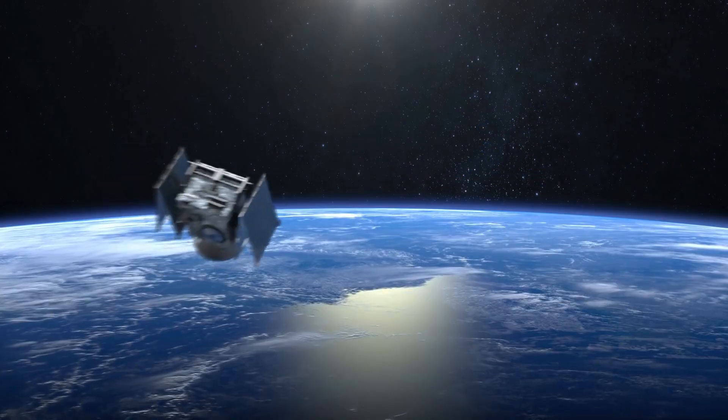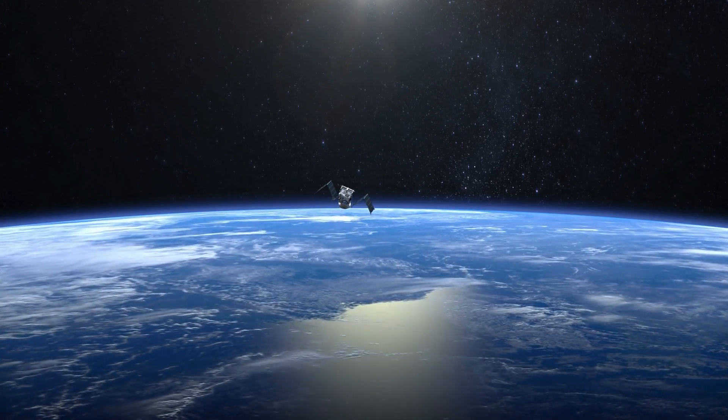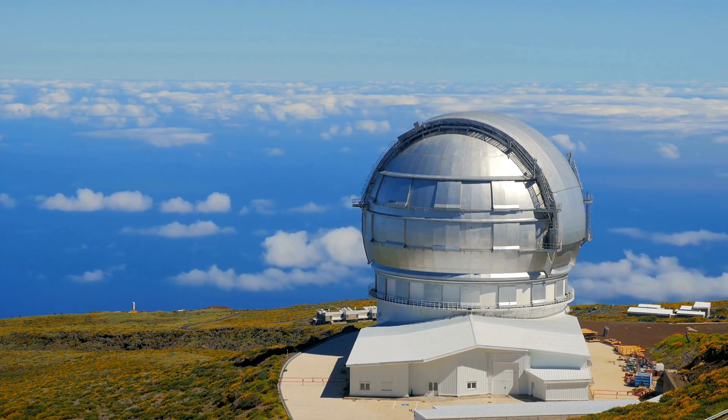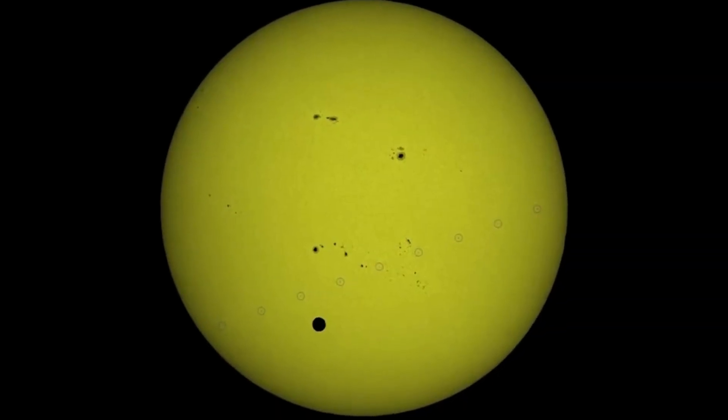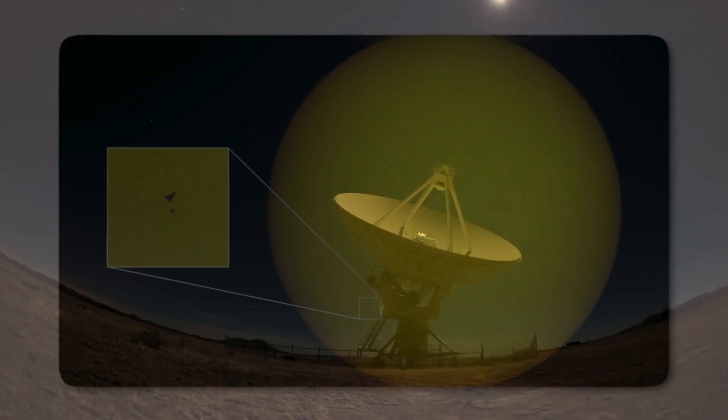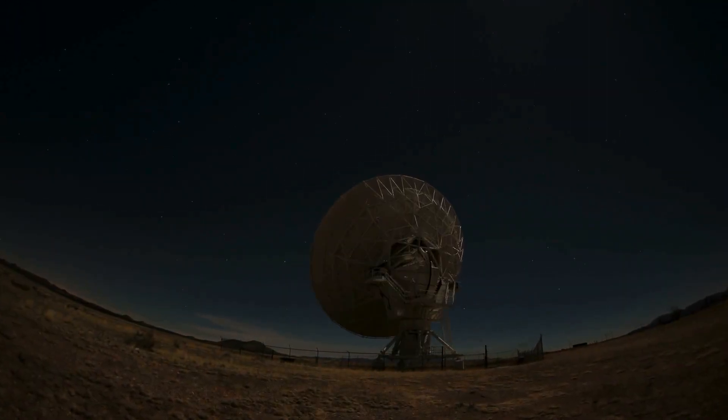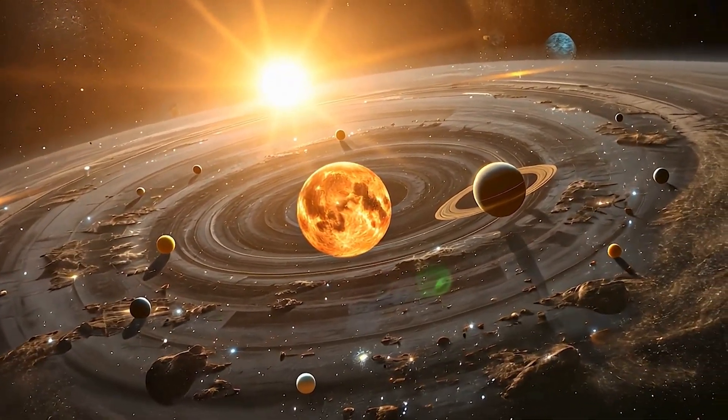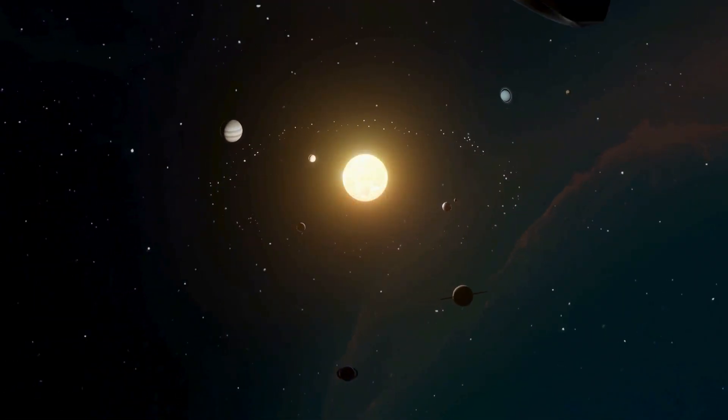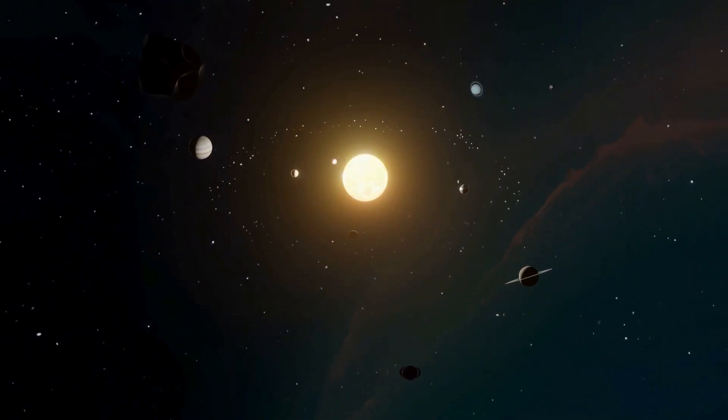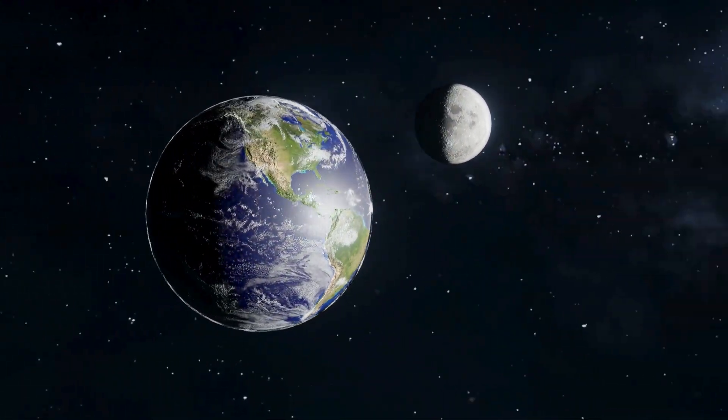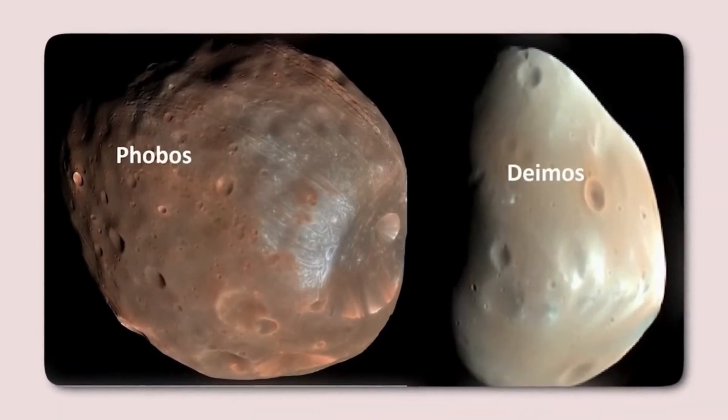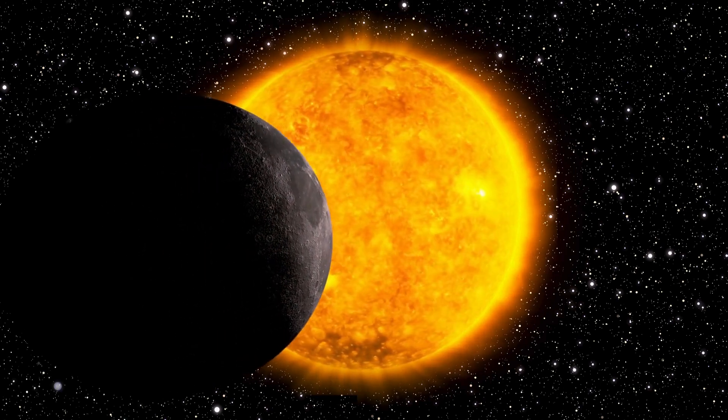Hubble continues to observe Jupiter and many other celestial objects, revealing new discoveries and expanding our understanding of the cosmos. From detecting exoplanets to studying distant galaxies, Hubble's contributions remain invaluable. With proper care, it could continue operating until 2040, potentially outliving even its successor, the James Webb Space Telescope. As we look to the future, one thing remains certain: Hubble has been seeing things it was never meant to see, and its legacy will endure for generations to come.